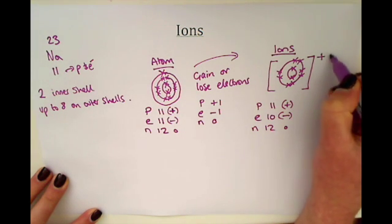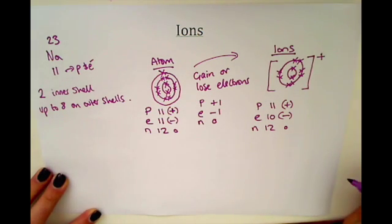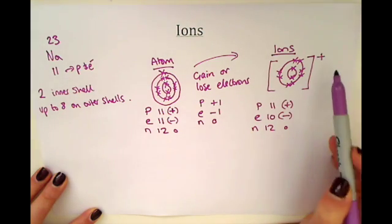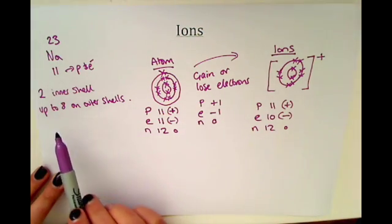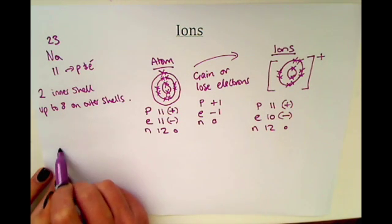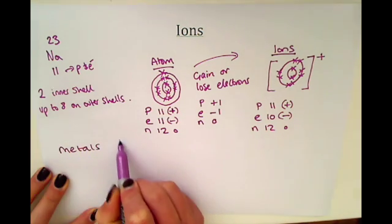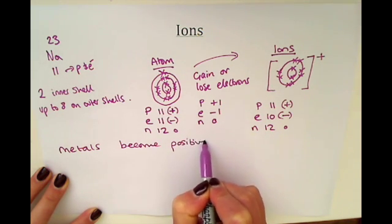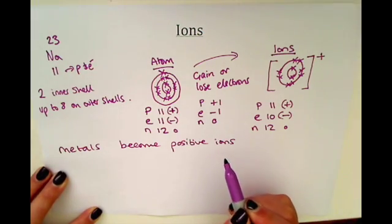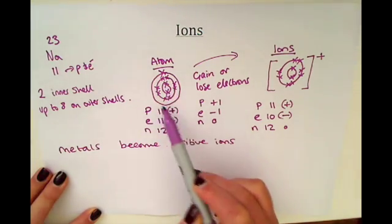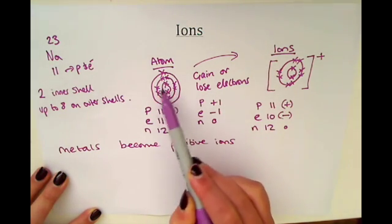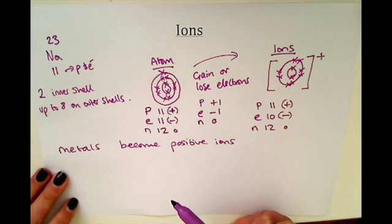You don't have to write the one - it's a bit like algebra when you don't include the ones, so you just write the plus. That is how sodium forms an ion and it is a positive ion. In fact, all metals become positive ions because they're always in a position whereby they have few electrons in the outer shell, so it is easier for them to lose electrons to have a full shell than it is to gain electrons.